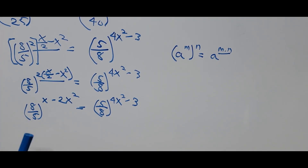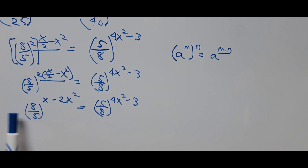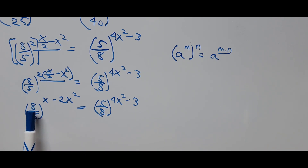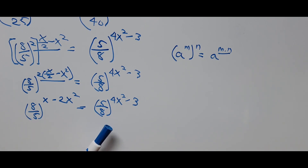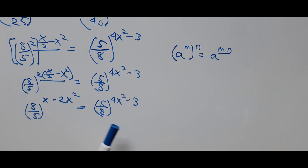From here, if you notice, the bases on the left and right are similar — actually, one side is the reciprocal of the other. So what we'll do next is take the reciprocal of the right side's base. We'll be inverting it so both sides have the same base, 8 over 5. The numerator and denominator will be transposed, and we'll be manipulating the exponent accordingly.